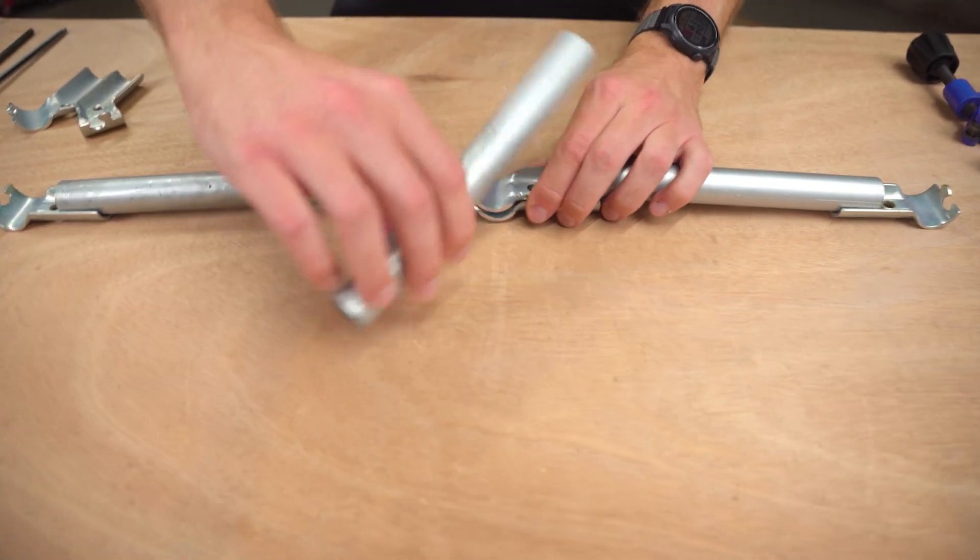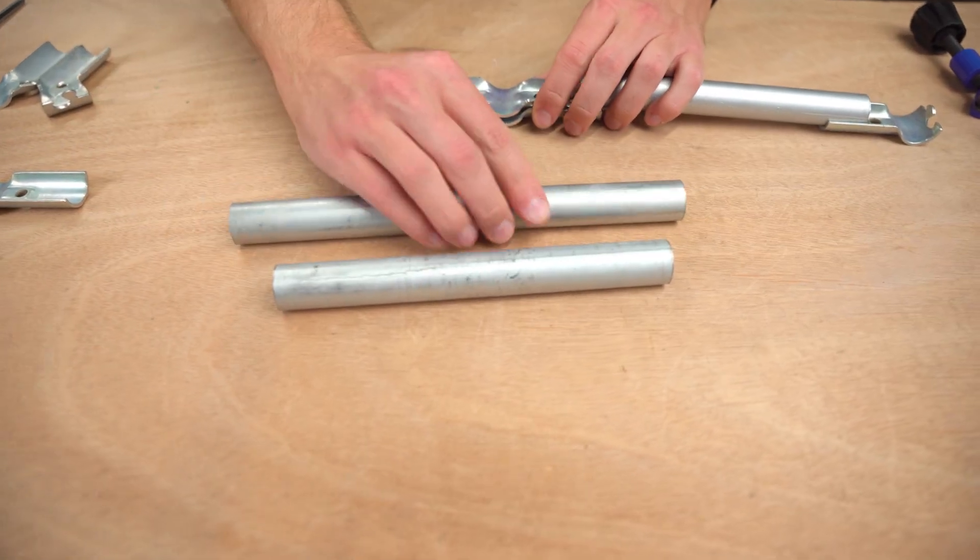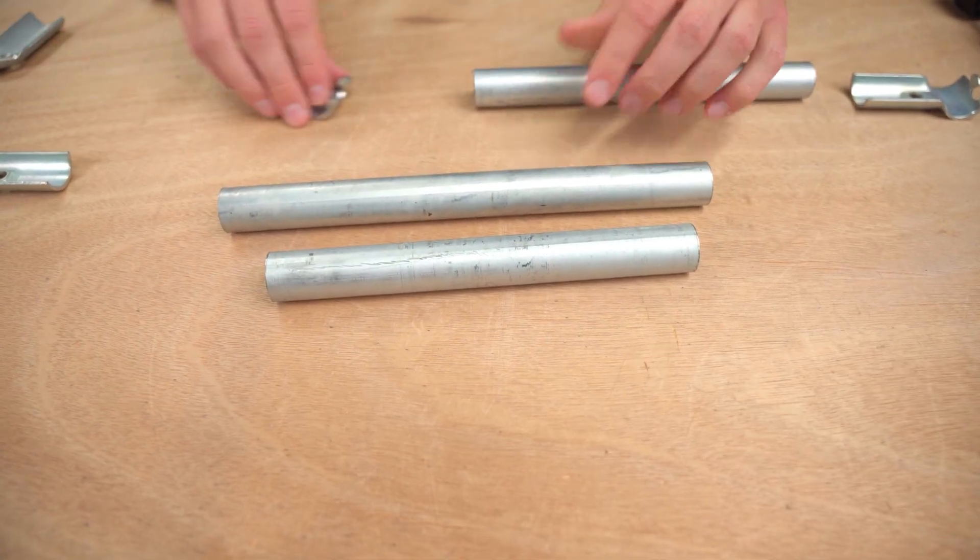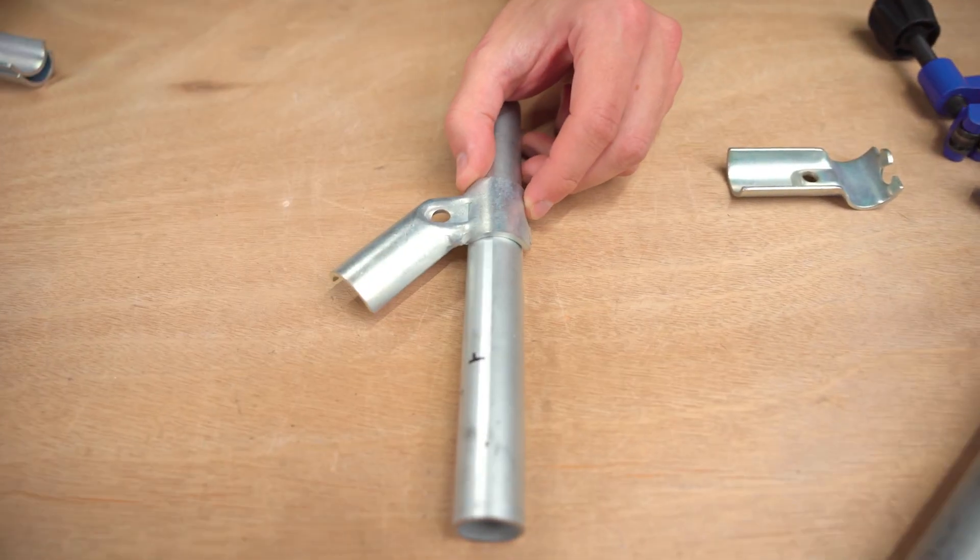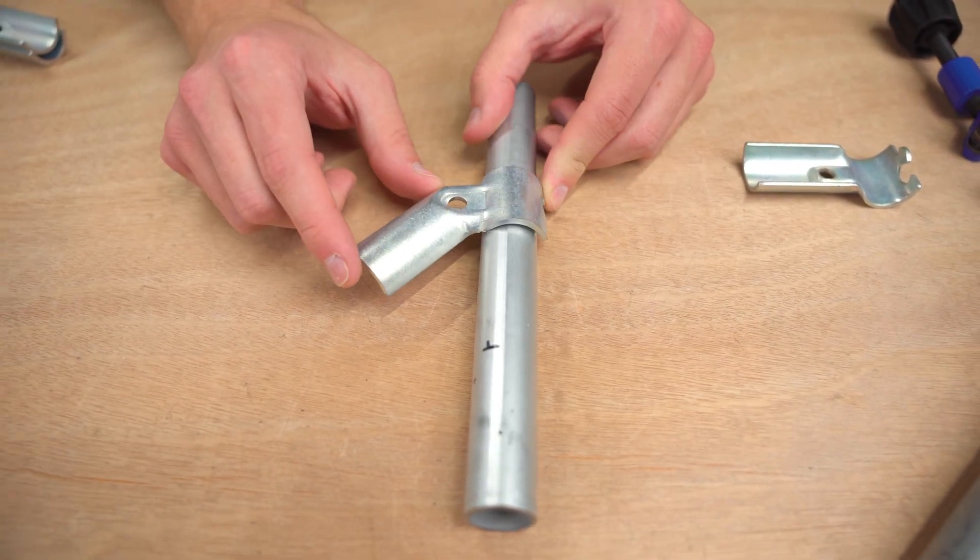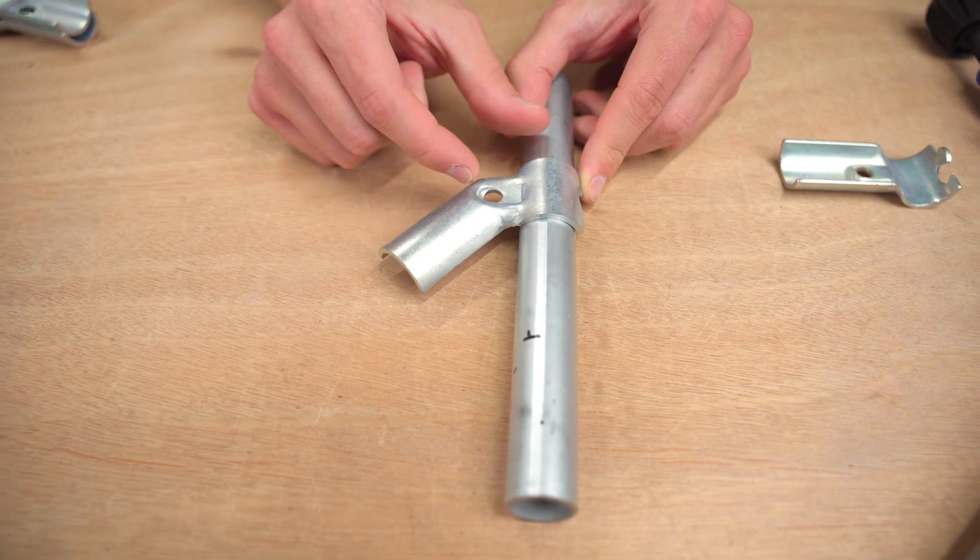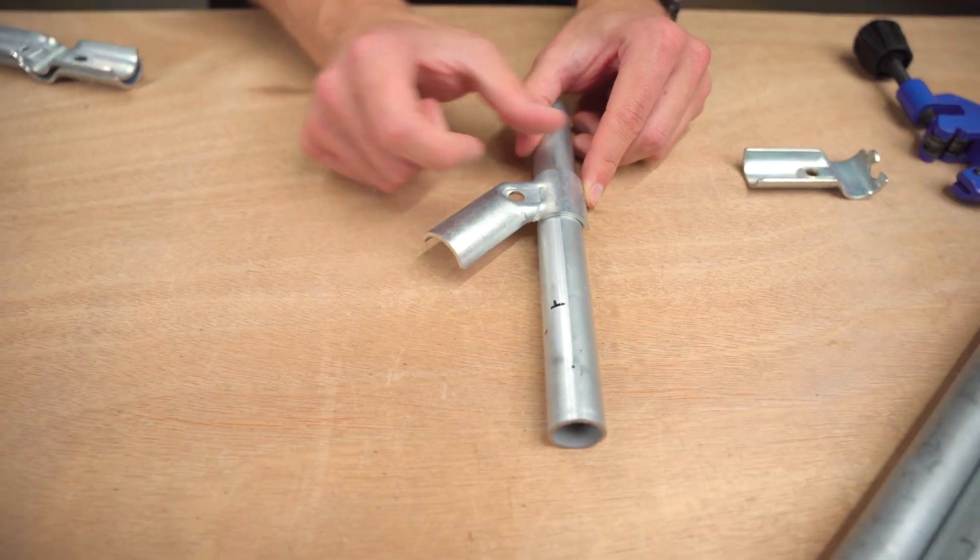But you're also going to run into cuts that you're going to need to make for other things like the 45 degree connector that I've got here. And this is a little bit more challenging to figure out the dimension for, obviously, because you've got this interesting angle here and then adding that length to the pipe.